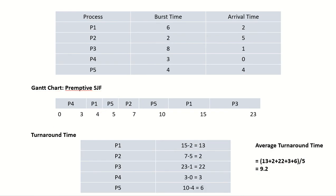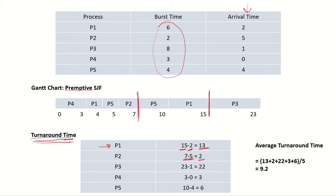Similarly, we can compute the turnaround time, assuming this was the only CPU burst and each process terminates after it. For P1, the process ends at time unit 15 and arrived at 2, so turnaround time is 13. For P2, it ended at 7 and arrived at 5, so turnaround time is 2. For P3, it terminated at 23 and arrived at 1, giving a turnaround of 22. The average turnaround time is the sum of all these divided by the number of processes, which gives 9.2.